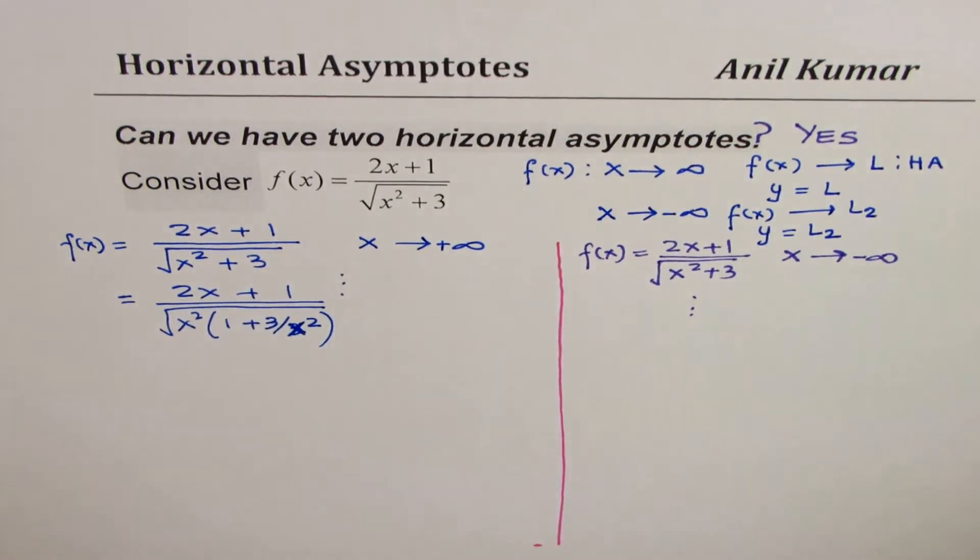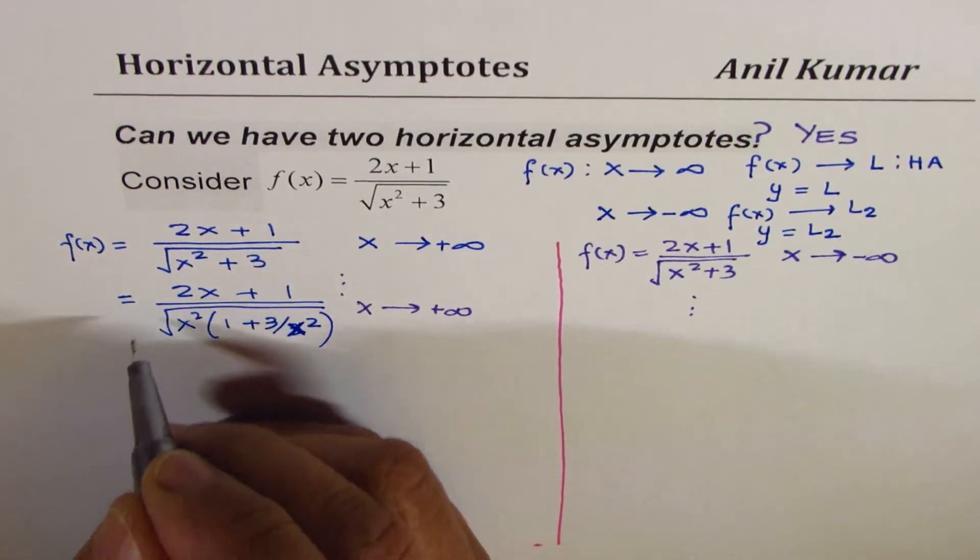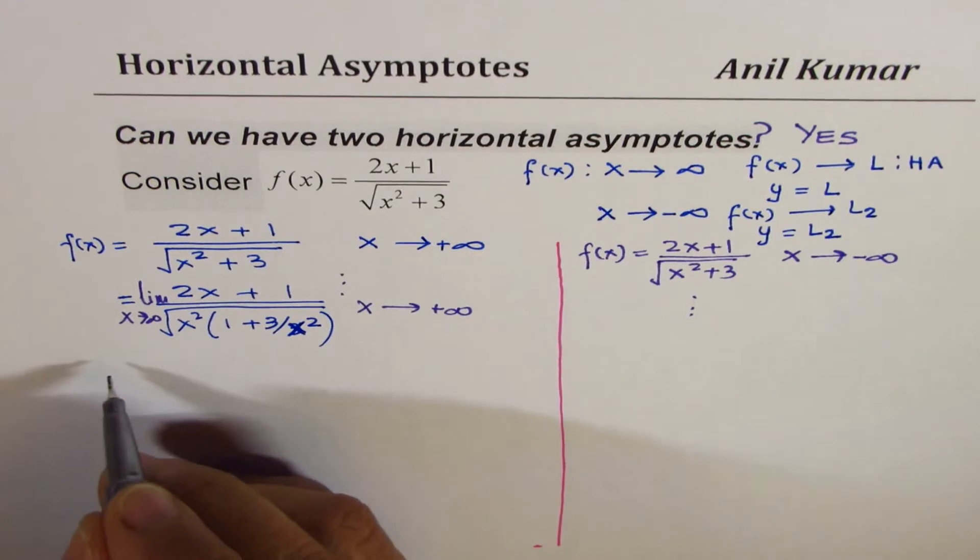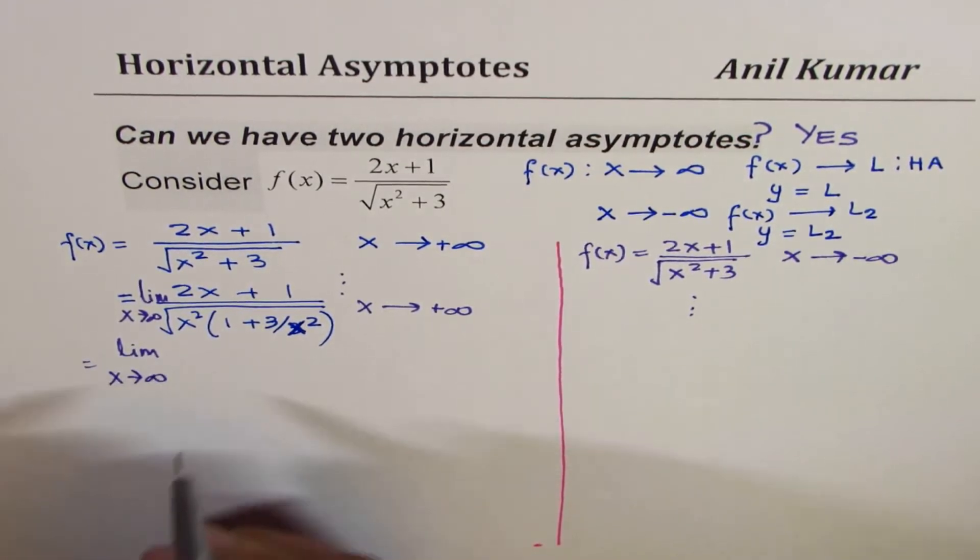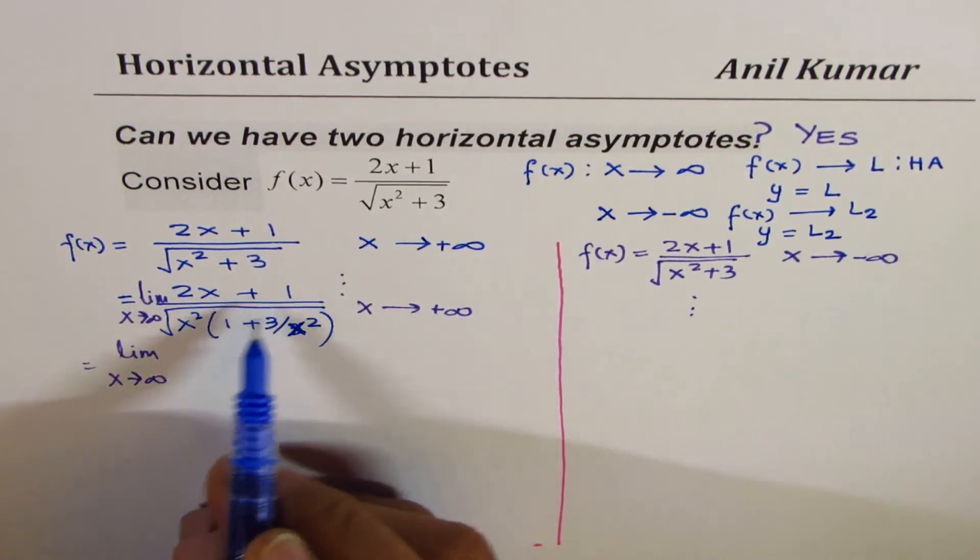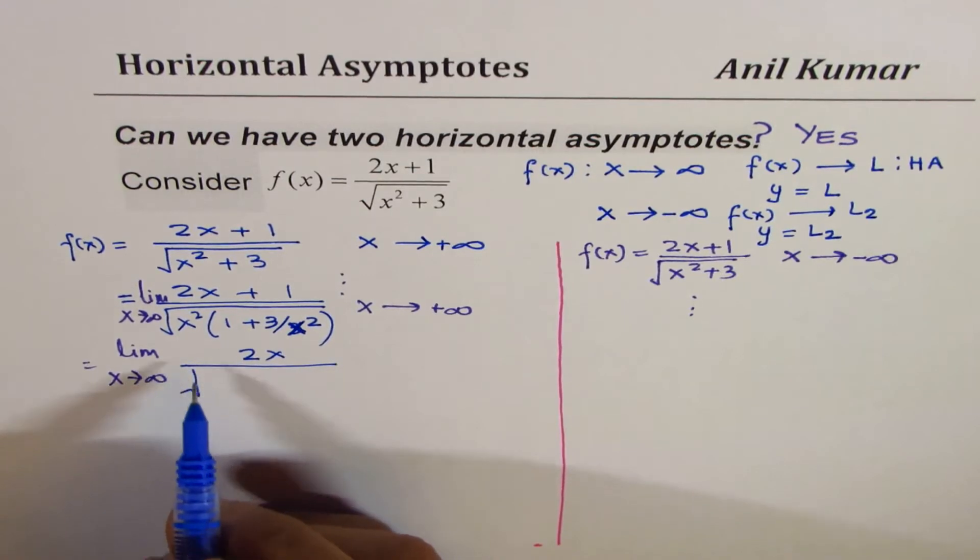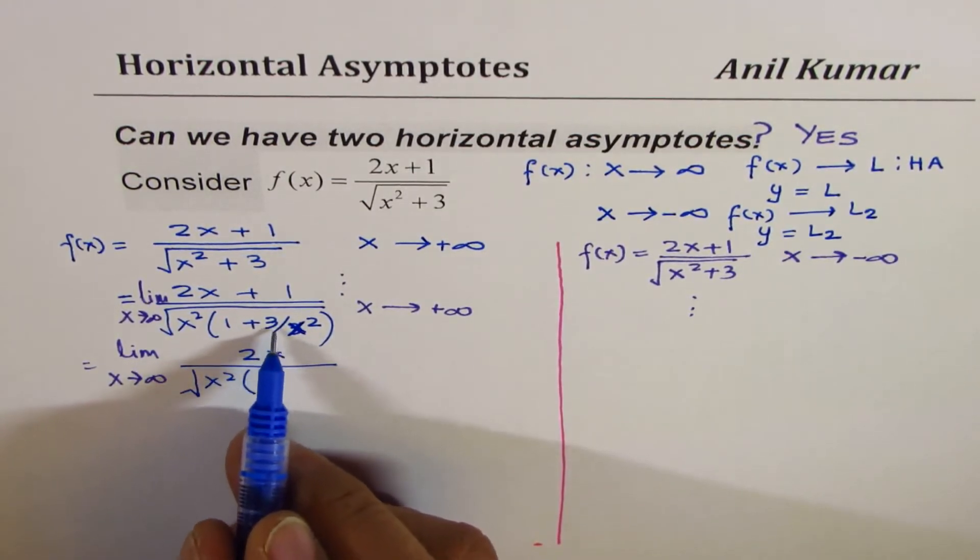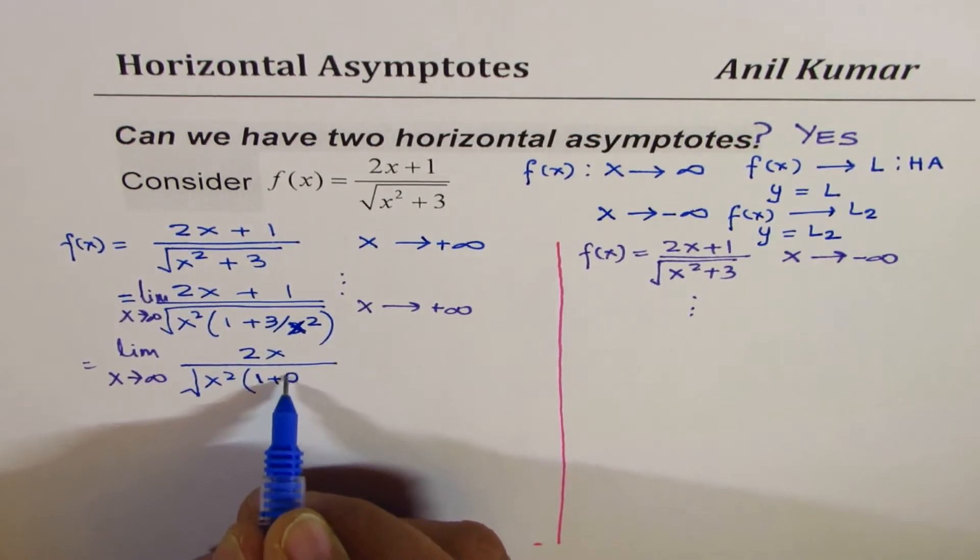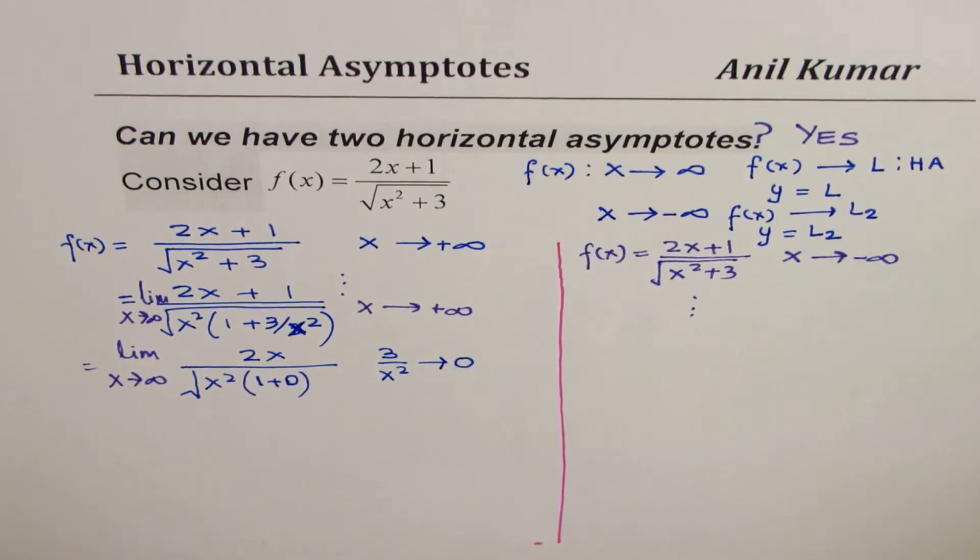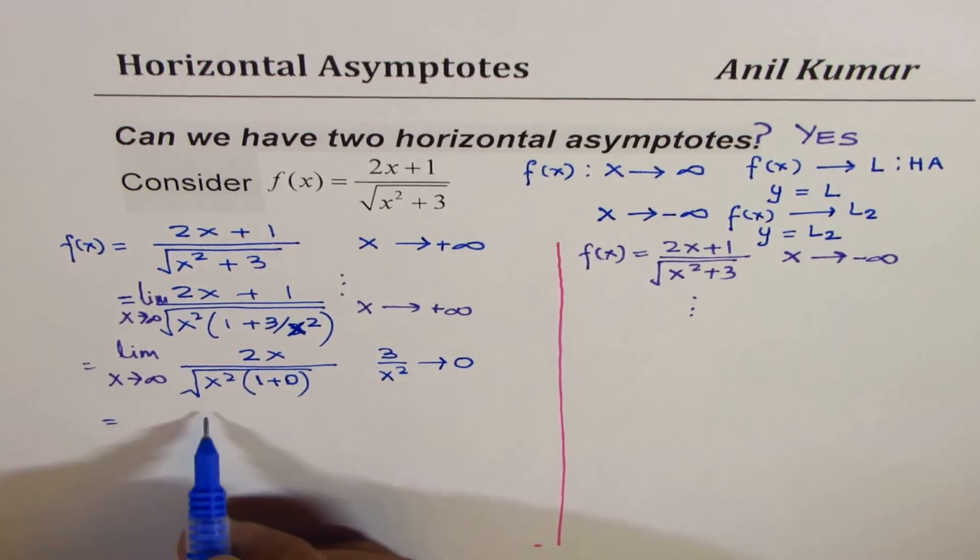Now what happens when x approaches a large positive value? Those who are doing limits can actually write this question as limit x approaches infinity. If x is very large, the numerator will approach 2x, since 1 is very small. We could write this as 2x divided by, in the case of denominator, x squared within brackets. 3 over x² is very small so it could be written as 1 plus 0, because 3 divided by a large number will approach 0.